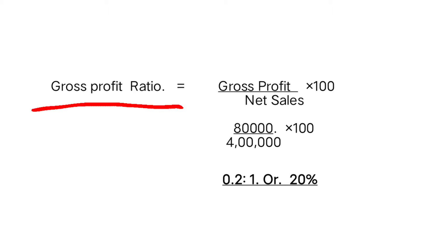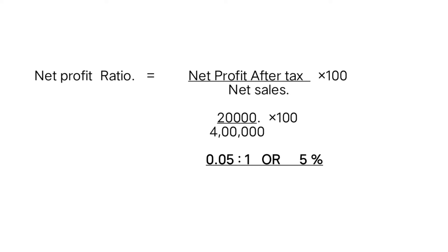Net profit ratio: since no tax information or provision for tax is given in the liabilities, we treat the given net profit as net profit after tax. Net profit is twenty thousand, net sales is four lakh. Twenty thousand divided by four lakh gives 0.05:1 or five percent.